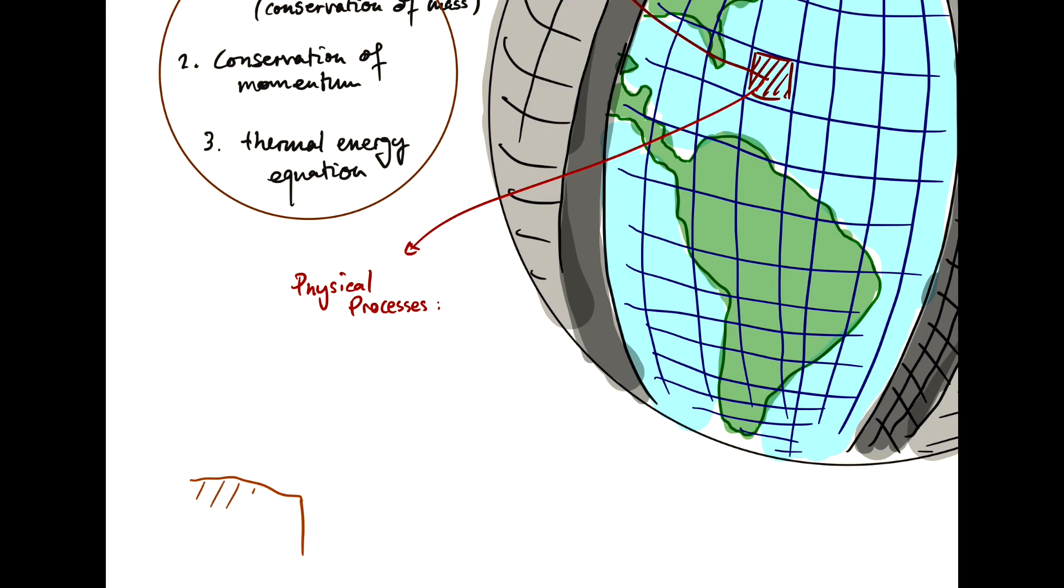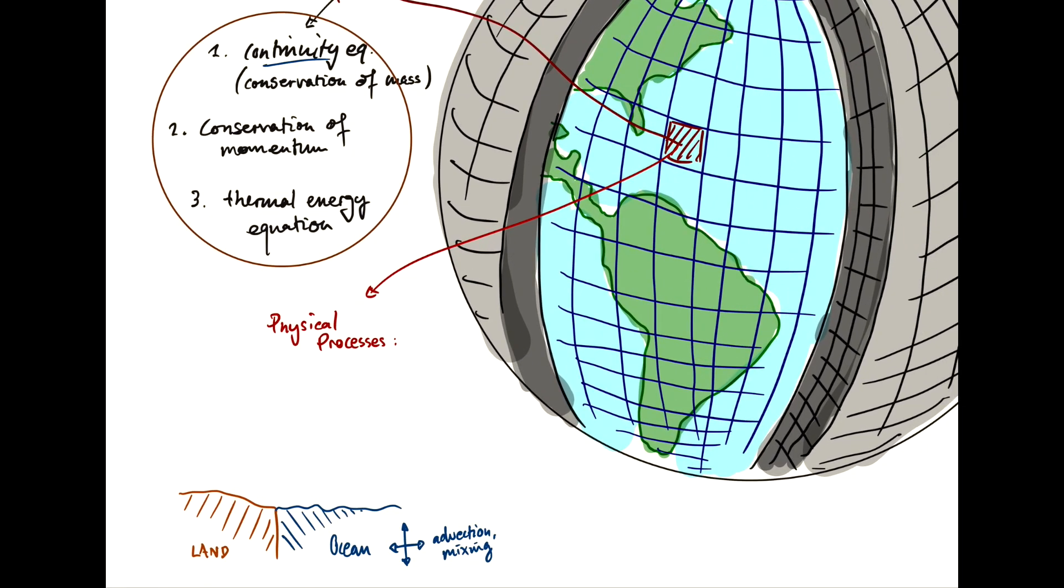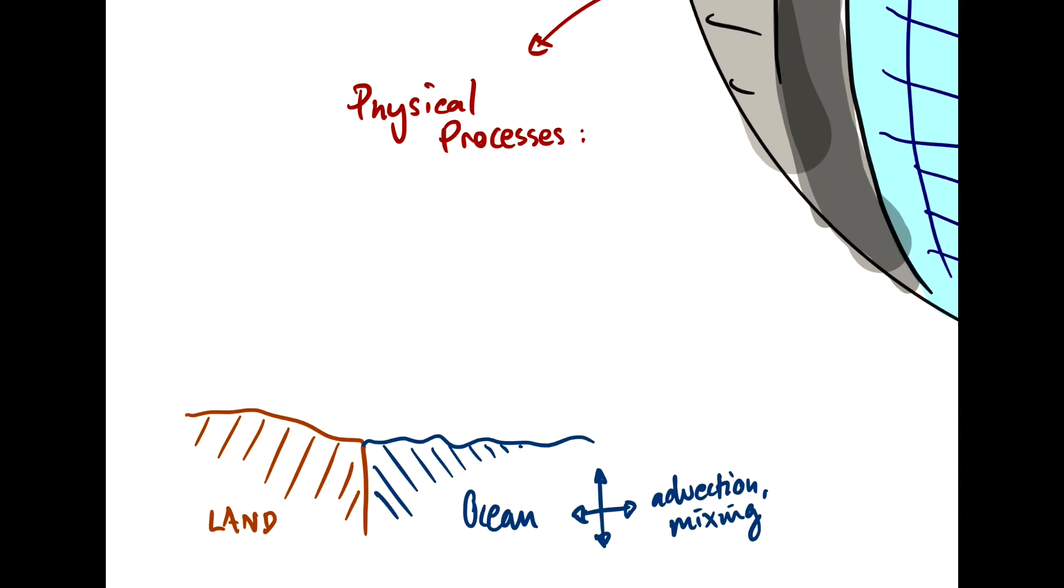You have land. Ocean. So, you have advection up and down in the ocean. And also mixing. And these are all things that you are solving with the equations that I've discussed up here. And then you have your atmosphere, of course, which also has advection and mixing. Then you have heat exchanges between different layers of your model, but also between the ocean and the atmosphere. You have exchange of moisture or water. And, of course, momentum.